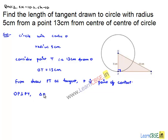Now, we can say that triangle OPT is right angle triangle. In this right angle triangle, we have hypotenuse 13 cm and a side 5 cm. So, to find the other side, we can apply Pythagoras theorem.